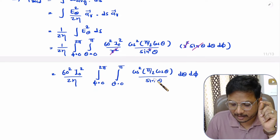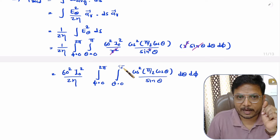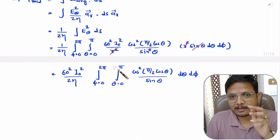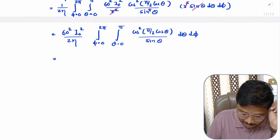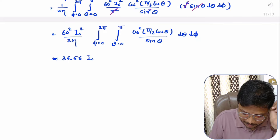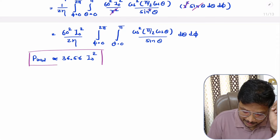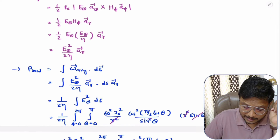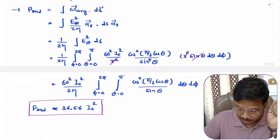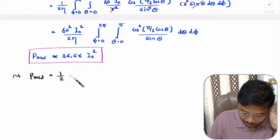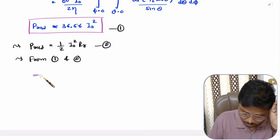To evaluate the integral, substitute cosθ = t and change the limits accordingly. I have taken this solution from the Balanis book; the result is that the radiated power equals 36.56 · I₀². In step four, radiated power is also equal to one-half · I₀² · Rr.